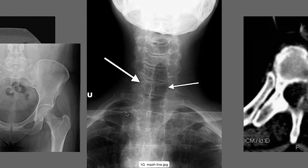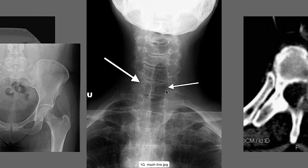We were talking earlier about mock lines — lines that occur from shadows that make it appear there is a problem in the spine. This x-ray is a perfect example. You can see the pedicle on one side but not the other, and higher up they start to disappear, so you might say the pedicle is missing and that's a problem. However, if you look carefully, the tracheal shadow overlies that pedicle, so it is highly unlikely the pedicle has disappeared.